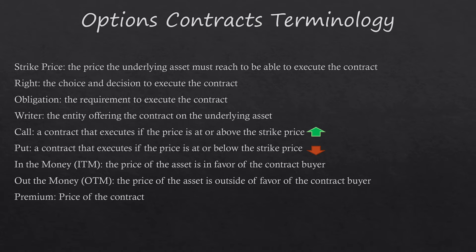In the money is a term used when the price of the asset is in favor of the contract buyer. Out of the money is when the price of the asset is outside the favor of the contract buyer — so if your benefit is that it goes up, you'd be in the money if the price is above the strike price. Premium is the price of the contract, so there are two things to consider: the price of the stock and the price of the contract. Options trading, as we executed with our first trade, is simply buying and selling the contract and not the underlying asset.